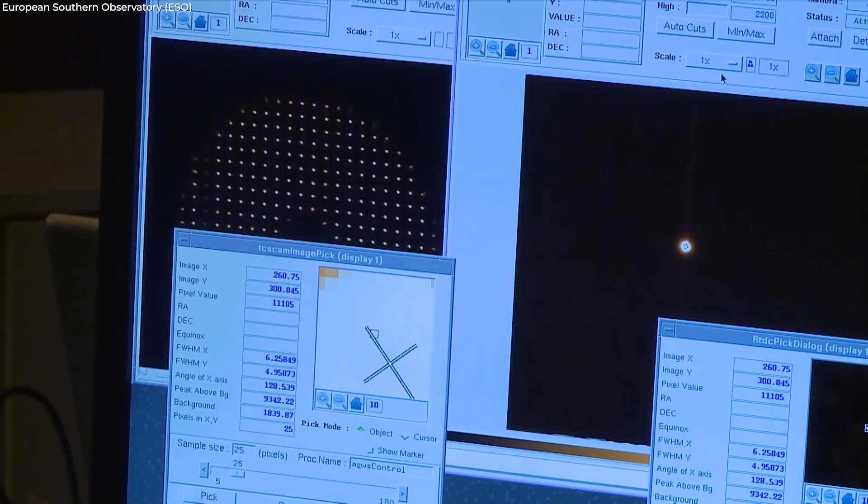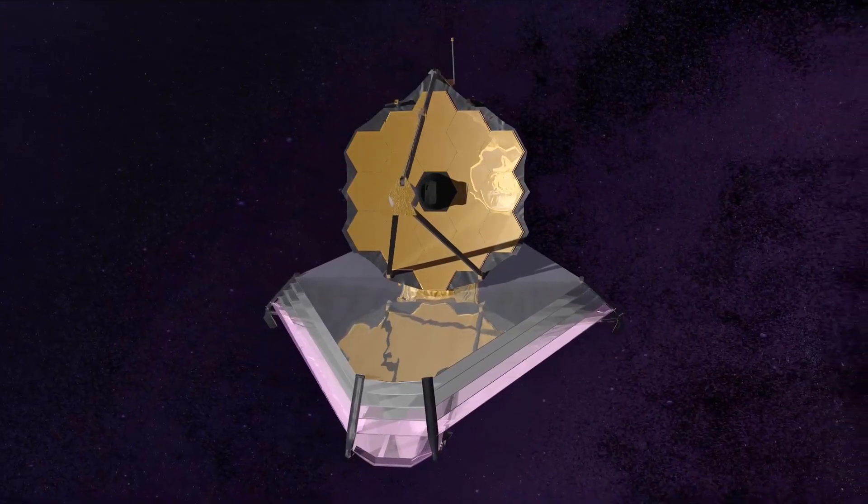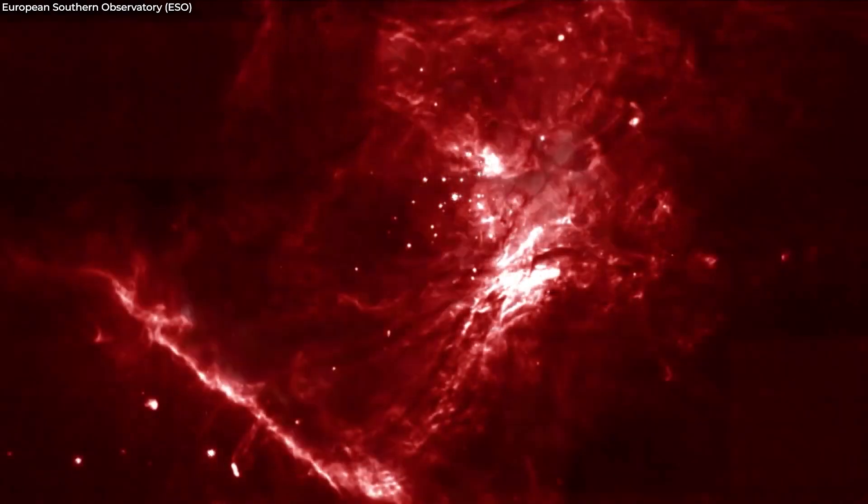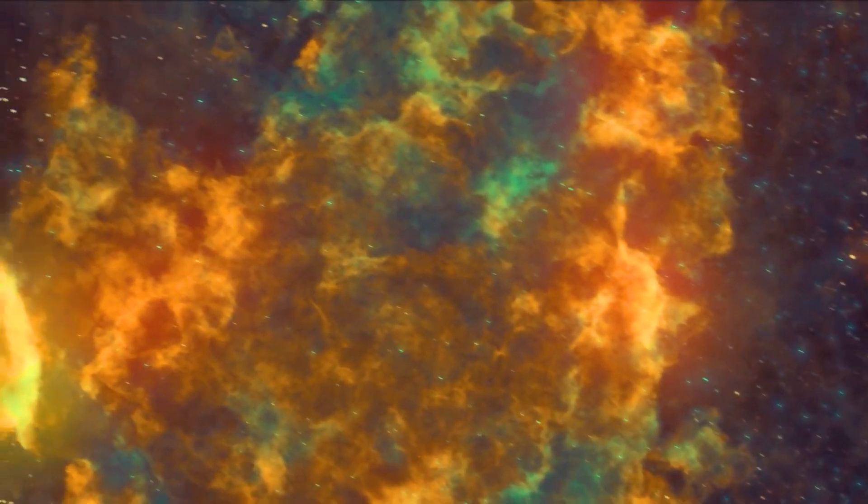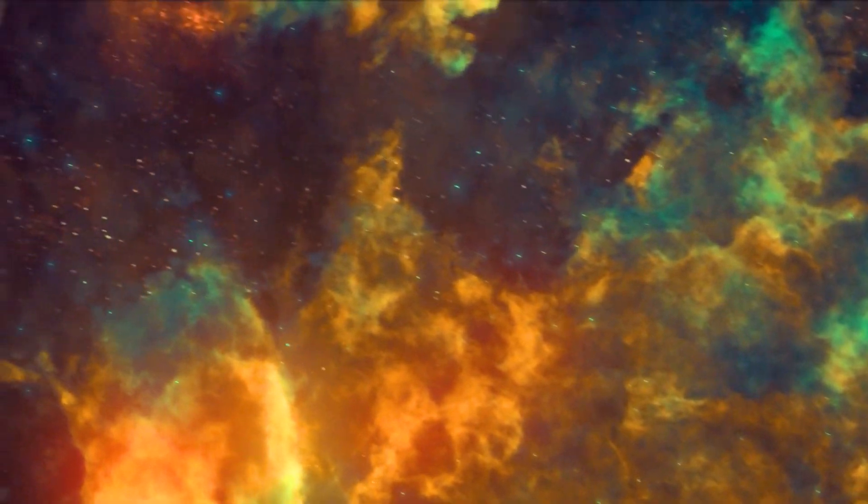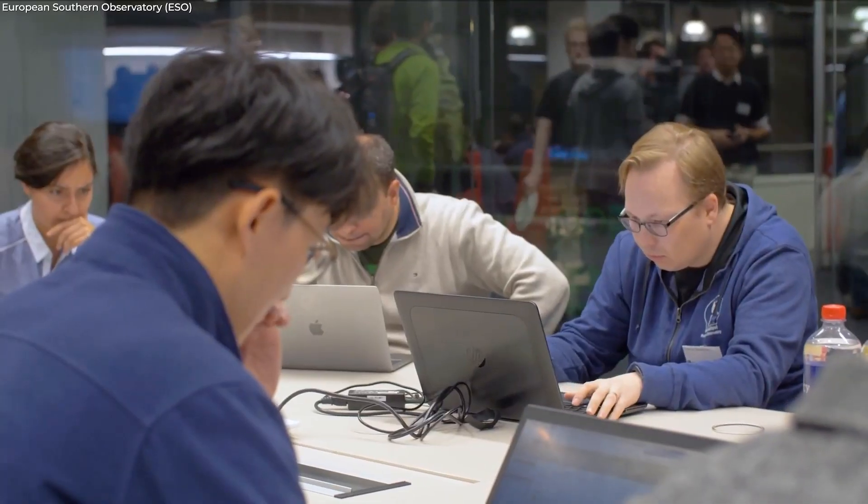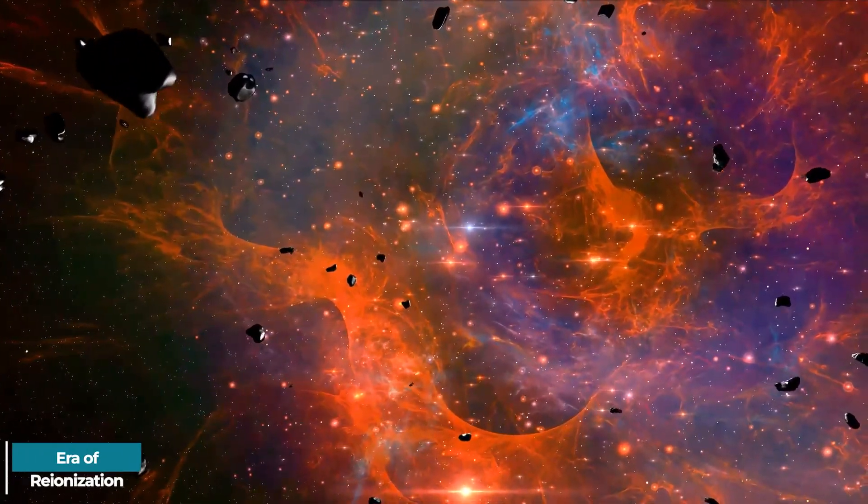But why? The reason has been identified by new data from NASA's James Webb Space Telescope. The stars of the galaxies emitted enough light to heat and ionize the surrounding gas, clarifying our collective view over hundreds of millions of years. These findings represent the most recent understandings of a period known as the Era of Reionization.